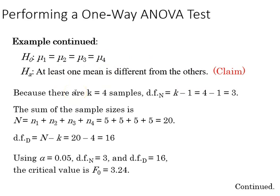Because there are K or four samples from the four metropolitan areas, the degrees of freedom in the numerator will be 4 minus 1, 3.